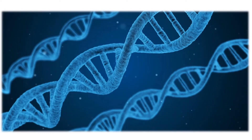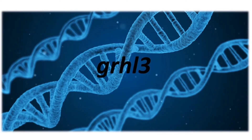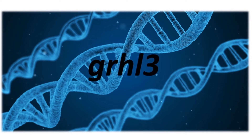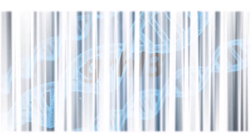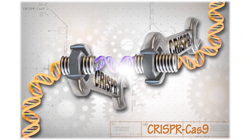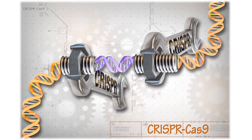Numerous crucial genes for epithelial development have been identified, of which grainy head like 3 is considered to be the most critical. Our group has generated a knockout of this gene in zebrafish using the CRISPR-Cas9 gene editing tool.